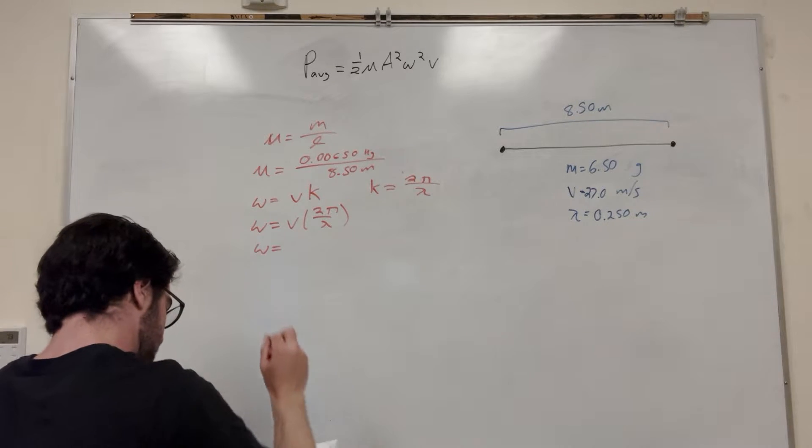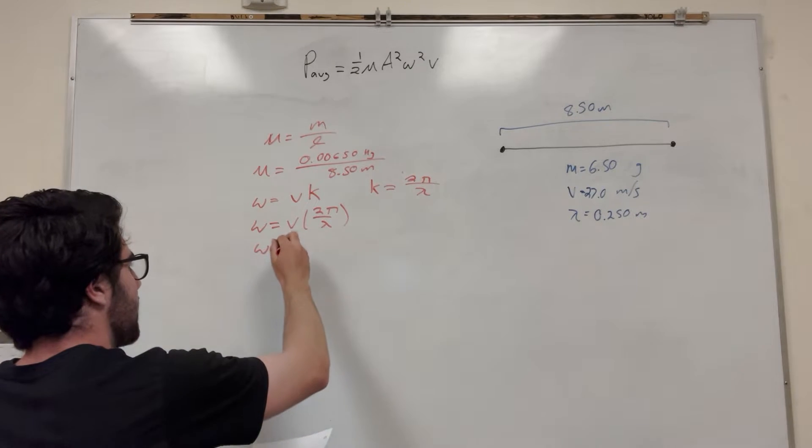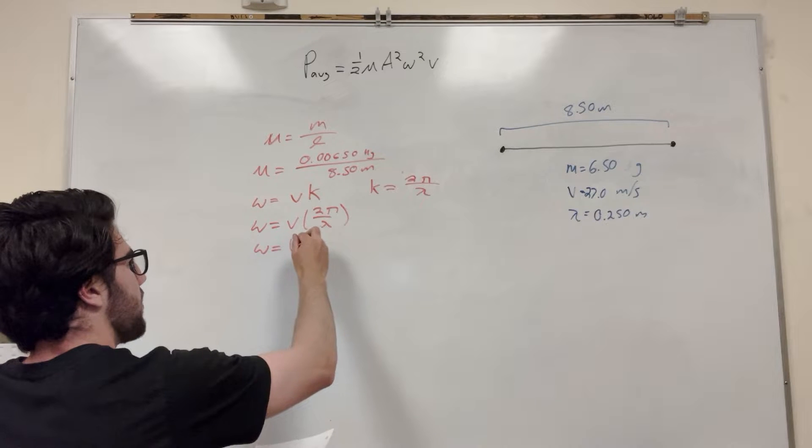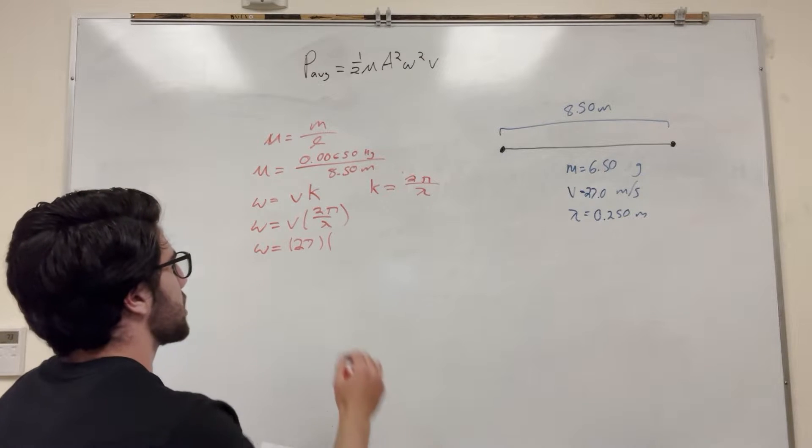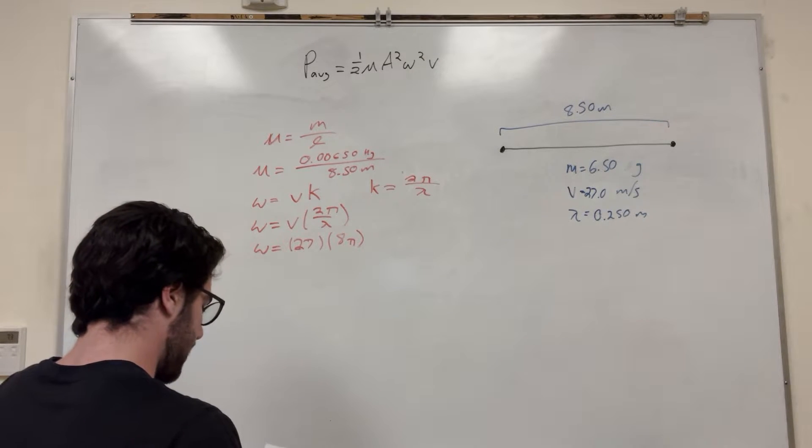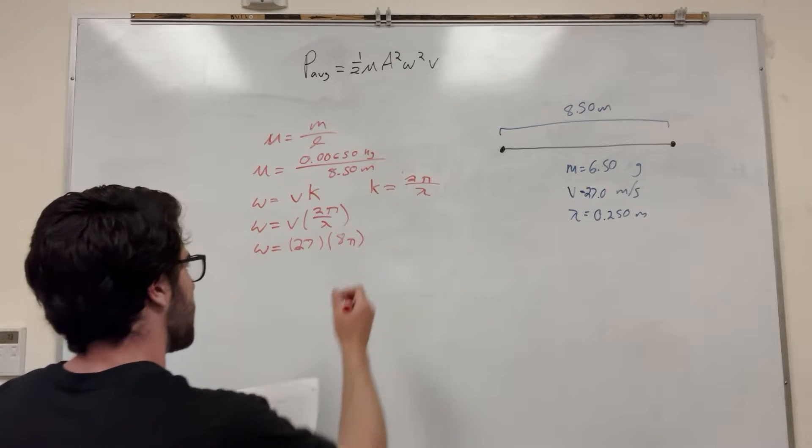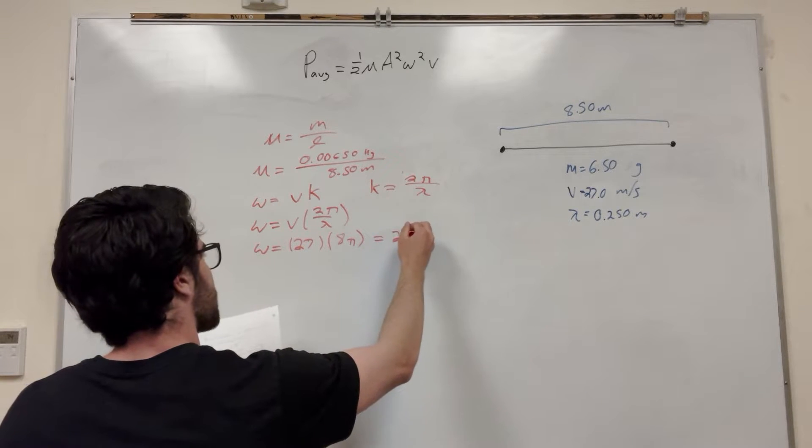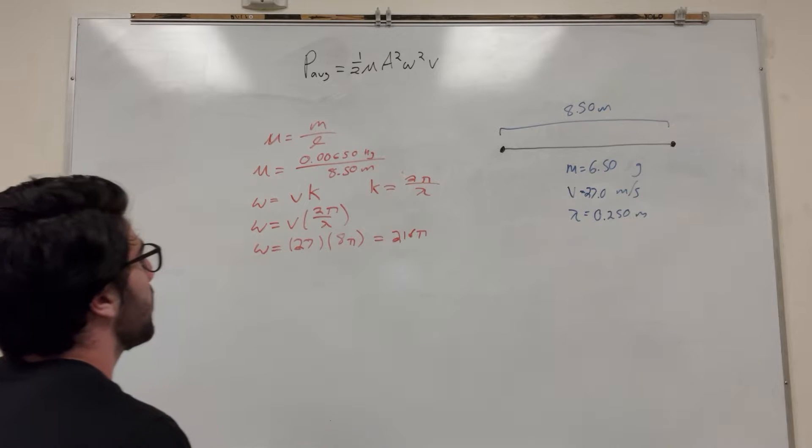And if you solve all this, you get W is equal to... So the velocity is 27, and then 2 pi over 0.250 is just going to end up being 8 pi. And then I didn't plug this in yet, but this gives you 216 pi. Now we have everything we need.